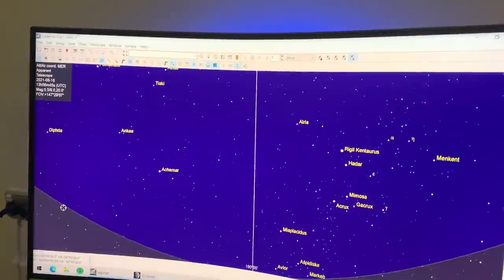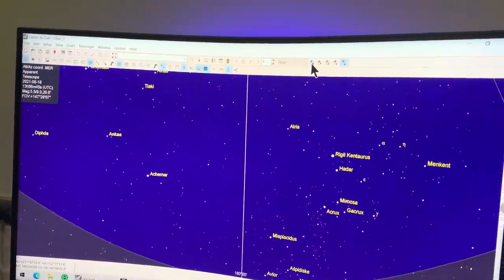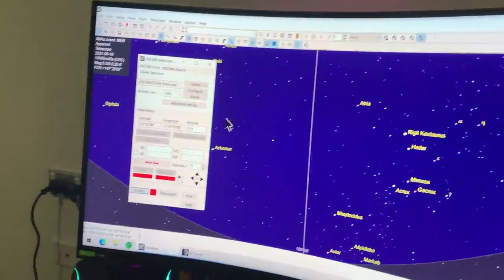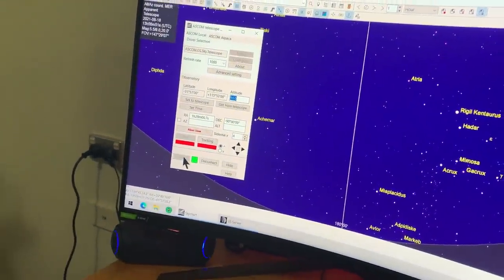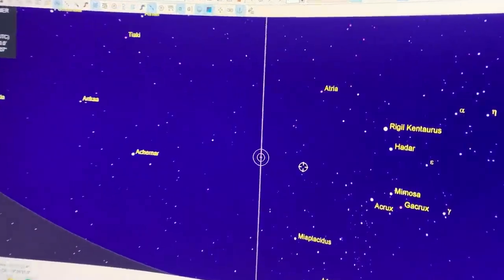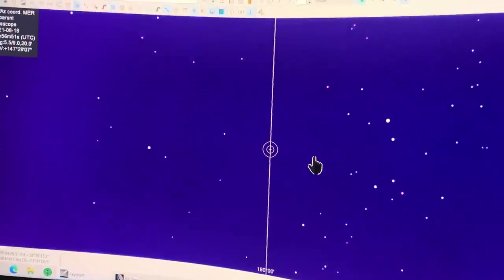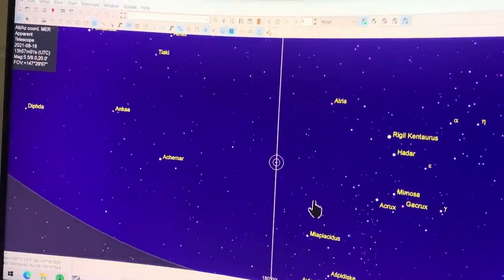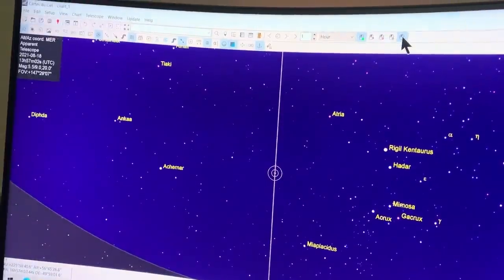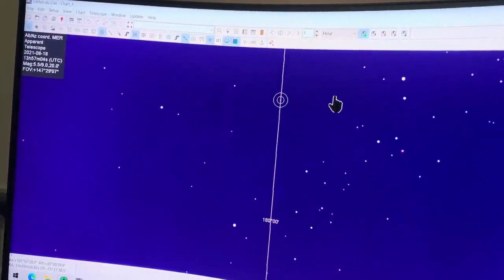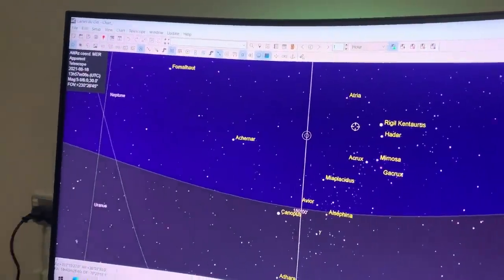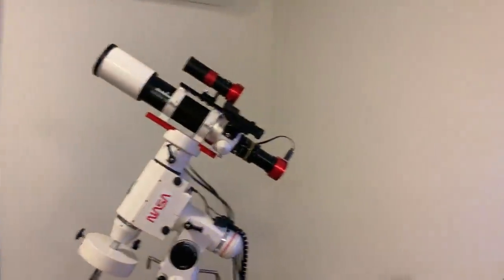We then fire up the planetarium program and I use Skycharts, which is completely free and works very well. So now we connect this software to the Green Swamp Server. And this reticle is showing us where the telescope is pointing, presently at the south celestial pole.